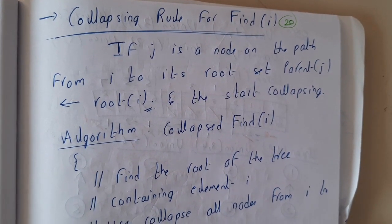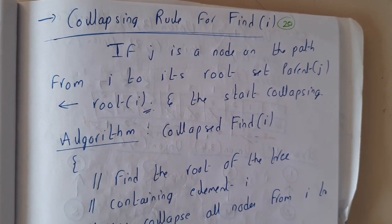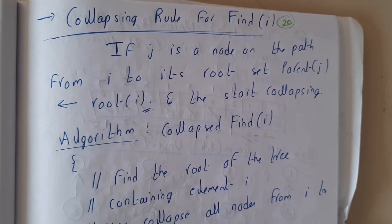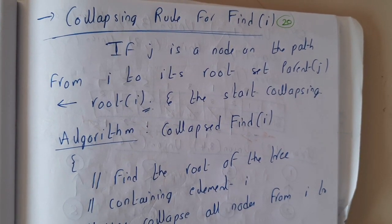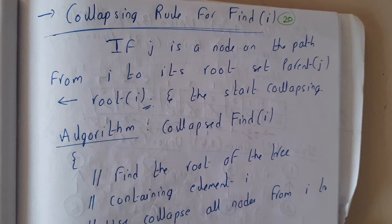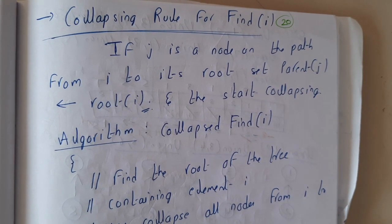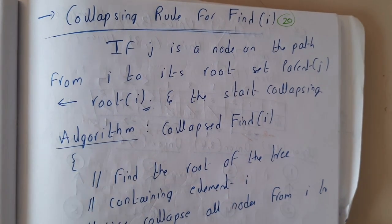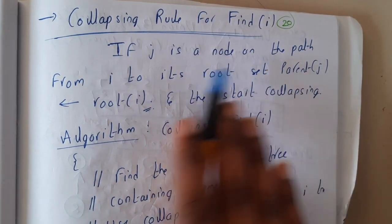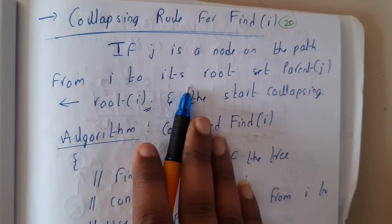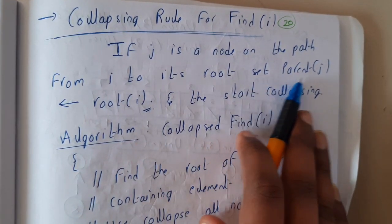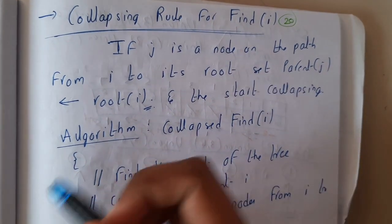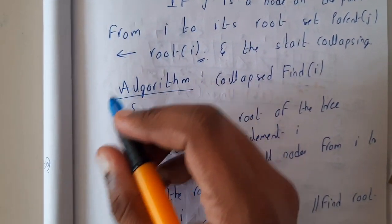Hello guys, we are back with our next lecture. In this lecture, let us go through the collapsing rule for Find. This is an interesting problem which we discussed in the previous lecture. For finding an element, we will be finding the root of the whole tree or subset. If j is a node on the path from i to its root, set parent of j to root of j, then start collapsing.